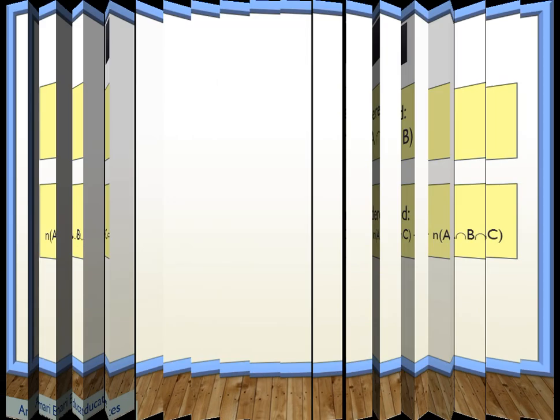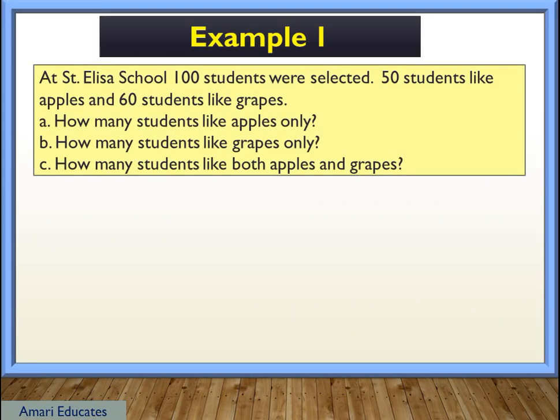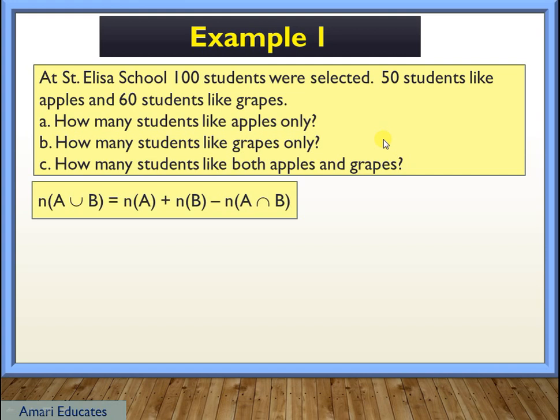Let's start with our first example. At St. Elisa School, 100 students were selected. 50 students like apples and 60 students like grapes. How many students like apples only? How many students like grapes only? And how many students like both apples and grapes? Take note that there are two groups involved, those who like apple and those who like grapes. So the formula that we're going to use is this one.